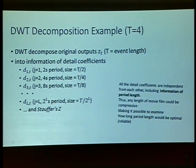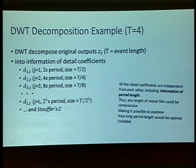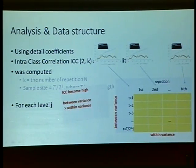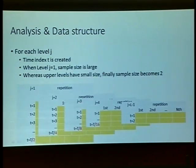Thus, any length of movie film could be compressed, making it possible to examine how long a period length would be optimal. Data structure becomes repetition and time length for each level. ICC becomes high when between variance is higher than within variance. For each level, time index T is created. When level one has a large sample size, upper levels have smaller size, and finally the sample size becomes 2.